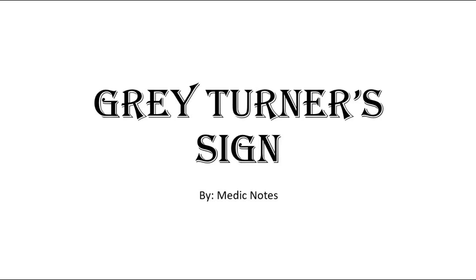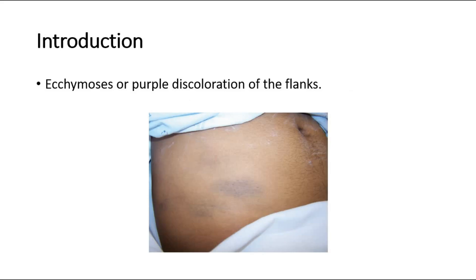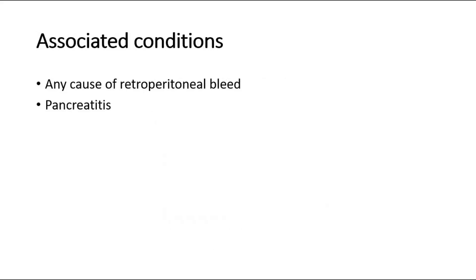Welcome back to another video of Medic Notes. This video is on Gray Turner's sign. Gray Turner's sign is used to describe the ecchymosis or purple discoloration of the flanks, shown in this picture. It can be associated with any cause of retroperitoneal bleed and is commonly associated with pancreatitis.